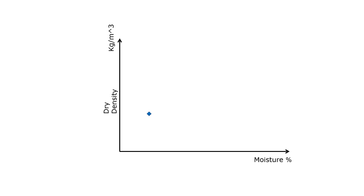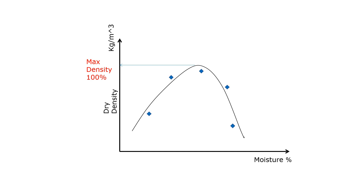After we have done five points on the graph with different moisture degrees, we can join them by a trend line and determine the maximum density, which we refer to as 100%, and also determine the optimal moisture content.